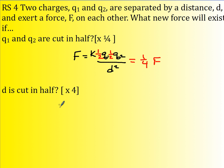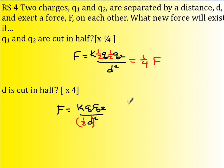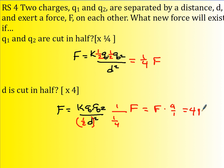What if d is cut in half? Do the same thing: f equals k q1 q2 divided by d squared. Now if d is cut in half, you put one half in for d, but that has to be squared. So this is going to be your original force times 1 over 1 fourth. Remember in math when you divide by a fraction you invert and multiply, so this is f times 4 over 1, or 4f.